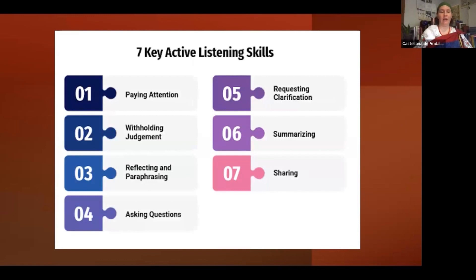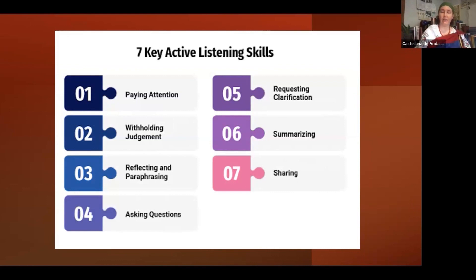Active listening — there are seven steps to active listening. The one I like to point out the most is reflecting and paraphrasing. If you're talking with anybody and they say something, and you are unsure of their meaning — if their meaning is ambiguous or unclear — you can try to say it back to them in your own words. That way you can clarify meaning and they can either agree or adjust their wording. That's a great way to improve communication.